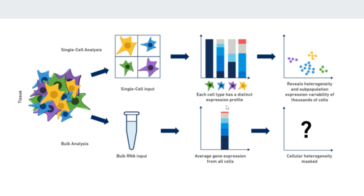In bulk sequencing, we could only say this gene is expressed or not expressed. But now with single cell technology, we can see which gene is expressed in which cell subtype. That's the advantage of single cell technology — we can separate cells, study them individually, and compare them. This reveals the heterogeneity and subpopulations within the tissue.